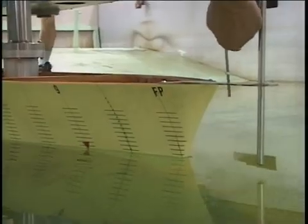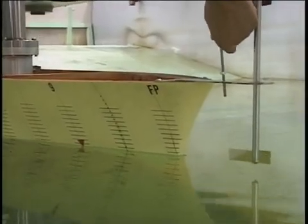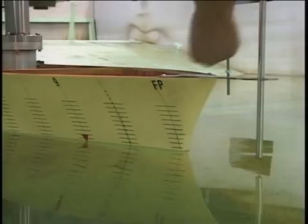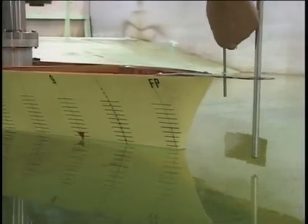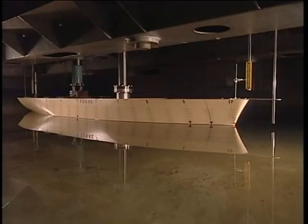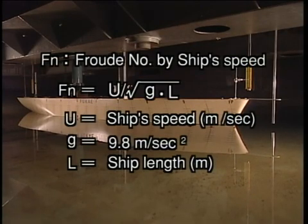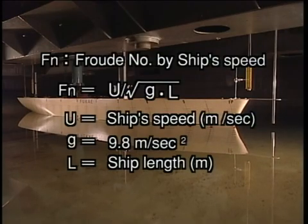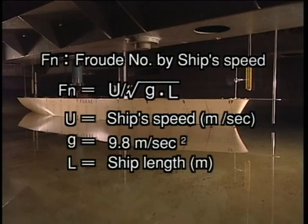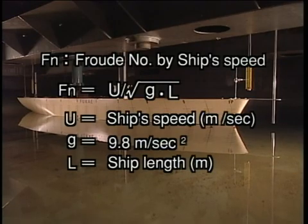We shall see this phenomenon with a ship model in a tank test. The Froude number is an essential concept for a model tank test. To run a model at a speed corresponding exactly to that of a real ship, a ship's speed is applied using an equation which gives the same Froude number to different model lengths and the comparable real ships.